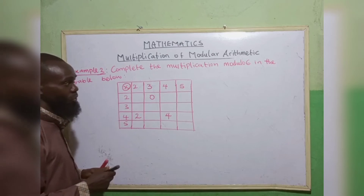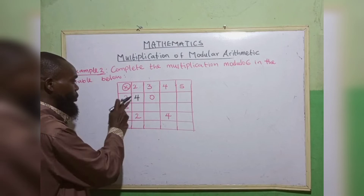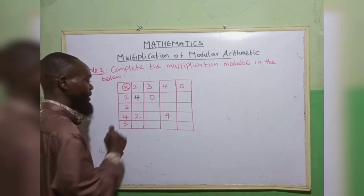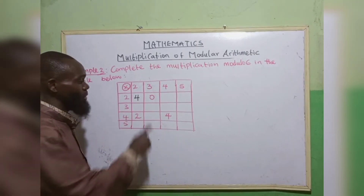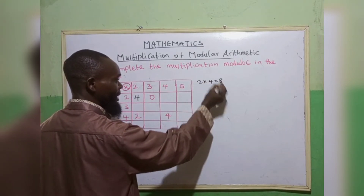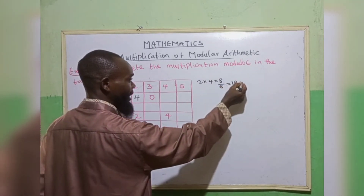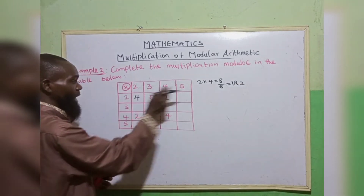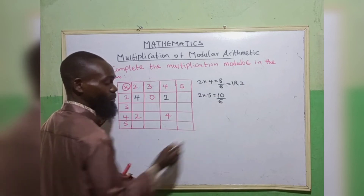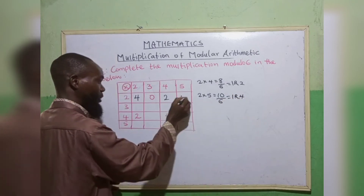Working through the table: 2 times 2 gives 4 — since 4 is less than 6, the answer is 4. 2 times 3 gives 6 — 6 divided by 6 gives 1, remainder 0. 2 times 4 gives 8 — 8 divided by 6 gives 1, remainder 2. 2 times 5 gives 10 — 10 divided by 6 gives 1, remainder 4. So we have 4, 0, 2, and 4 for row 2.